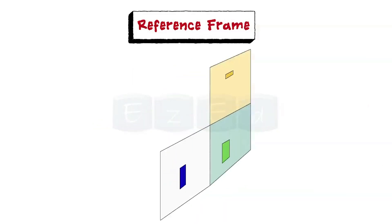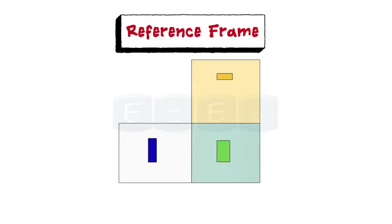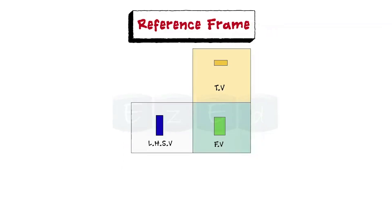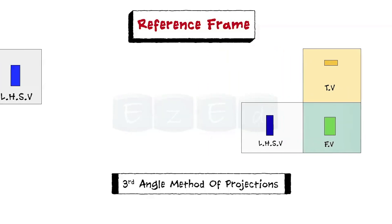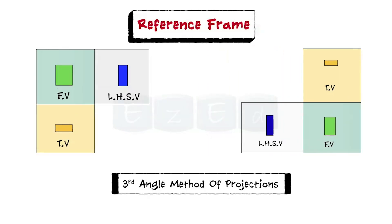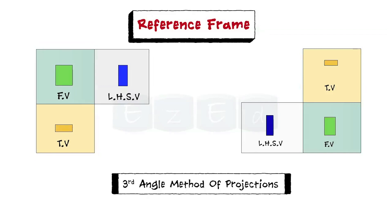When the object is in the third quadrant, the actual pattern of planes and views is shown. This is also known as the third angle method of projections and it is represented as shown. Note, according to Indian standards, we will be using only the first angle method of projection.